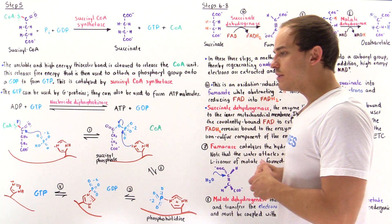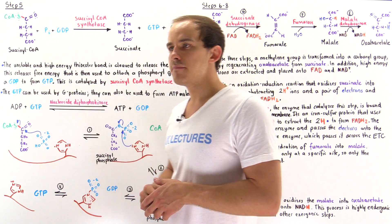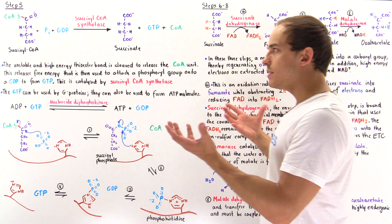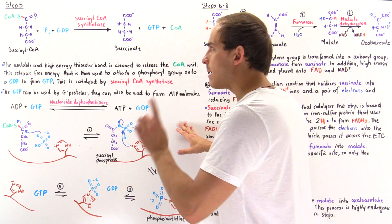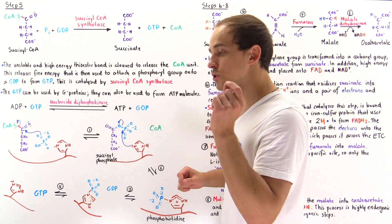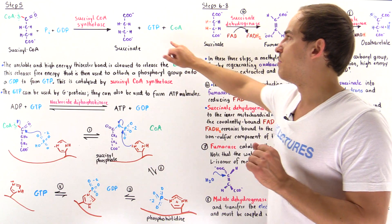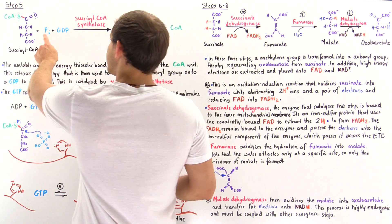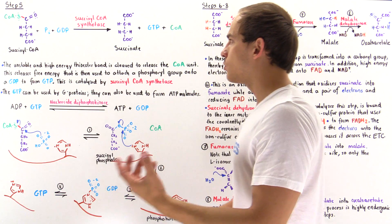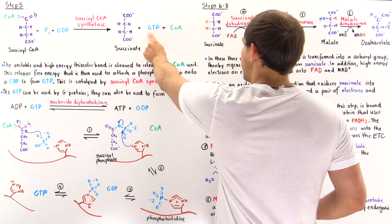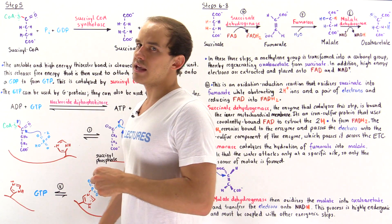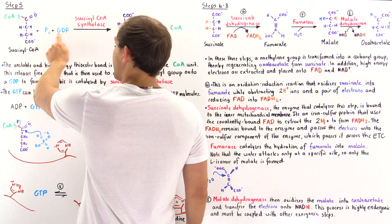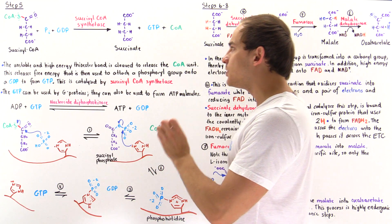Remember that in step 4, we synthesized a molecule known as succinyl coenzyme A, and this is the same molecule used as the reactant in step 5. This is actually the only step of the citric acid cycle in which we generate a high-energy purine nucleoside triphosphate molecule — we generate a GTP. We want to attach a phosphoryl group onto the GDP, the guanosine diphosphate, to form the guanosine triphosphate GTP. The problem is this requires an input of energy — it is an endergonic process.